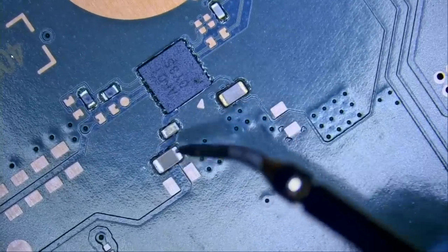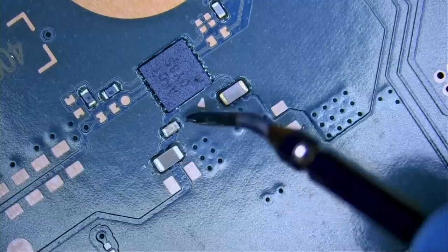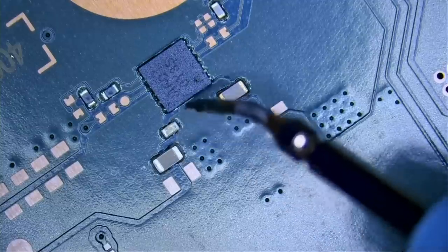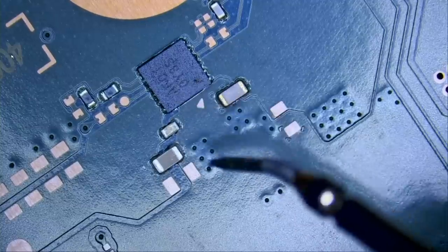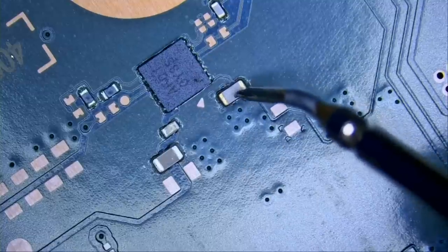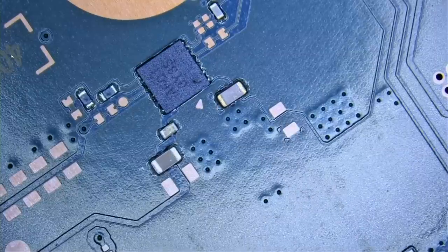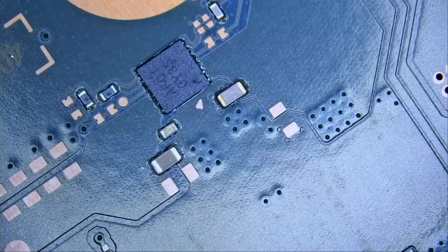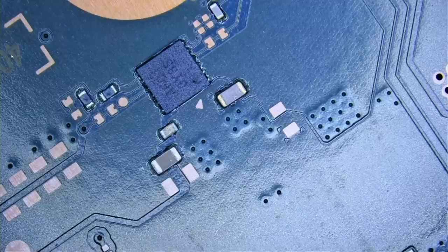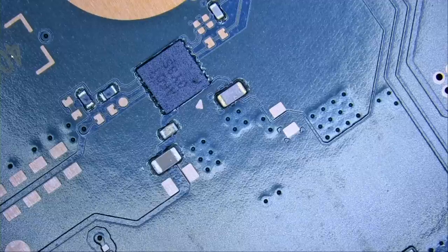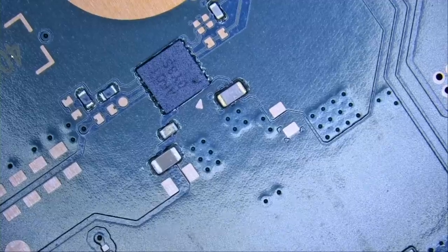So the problem right now could either be this cap, this cap which I highly doubt - I believe it would be this cap or it would be the chip. Either one. This one is measuring good. A small cap usually does not go bad. Almost always a big cap is what shorts out. So we can start by desoldering the cap and see if we can get rid of the short. If that happens then the problem is the cap. If we desolder the cap and we still have a short, then the problem is most likely the chip. Most likely. Let's do it.